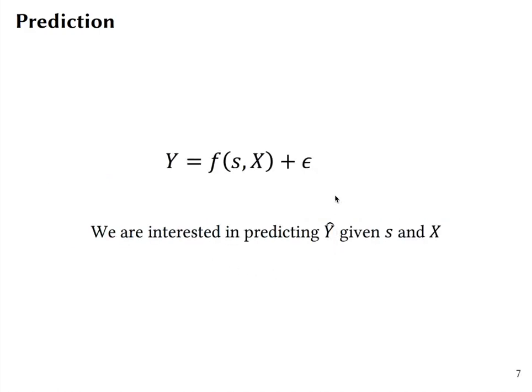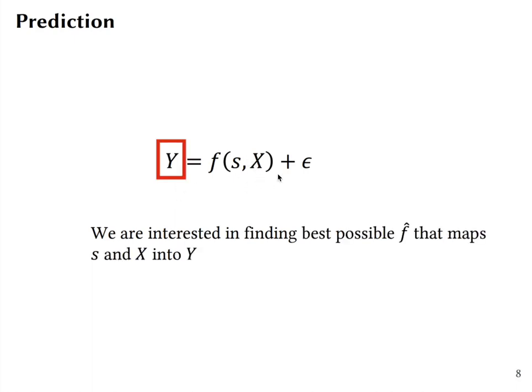What we are interested in here is not some particular parameter. We are interested in predicting Y hat given s and X. So what we will be doing is trying to find what is the best possible f hat that maps years of schooling and other characteristics X into income.